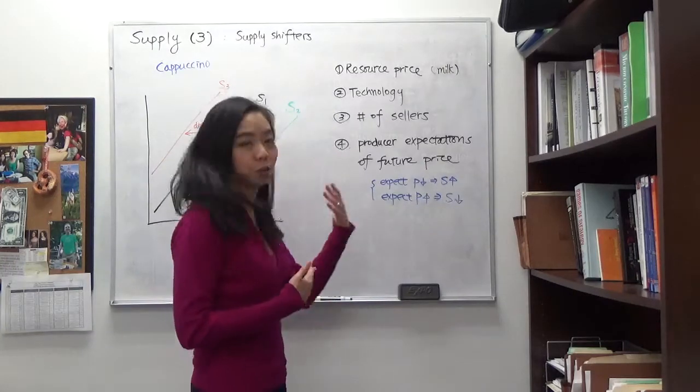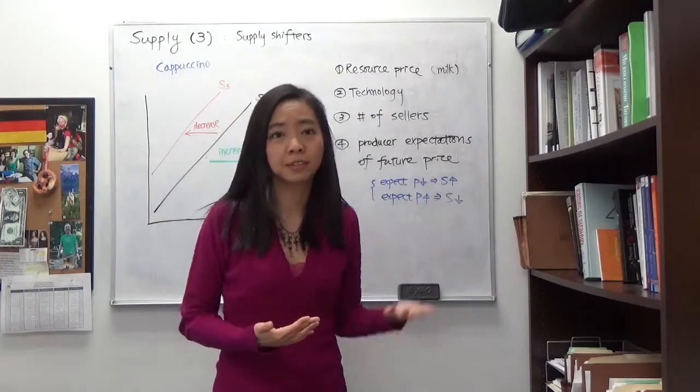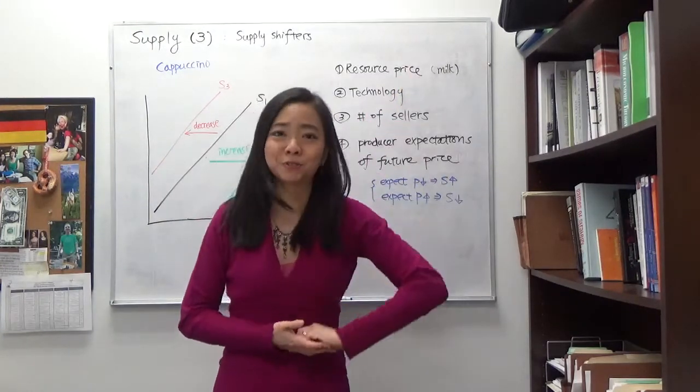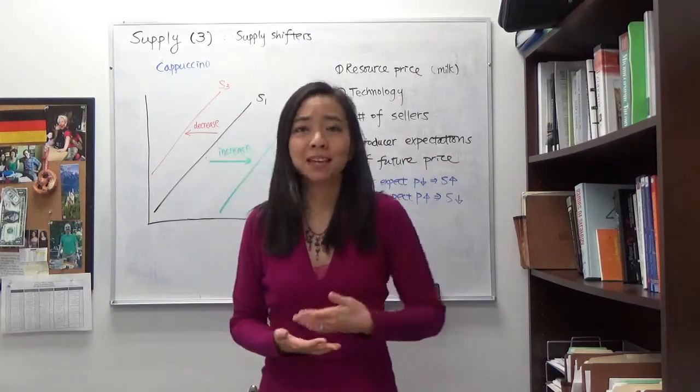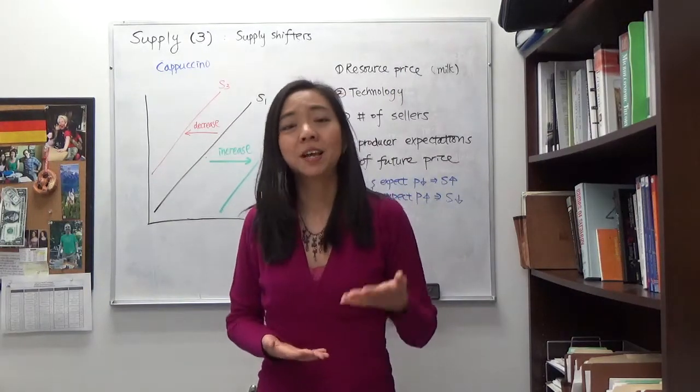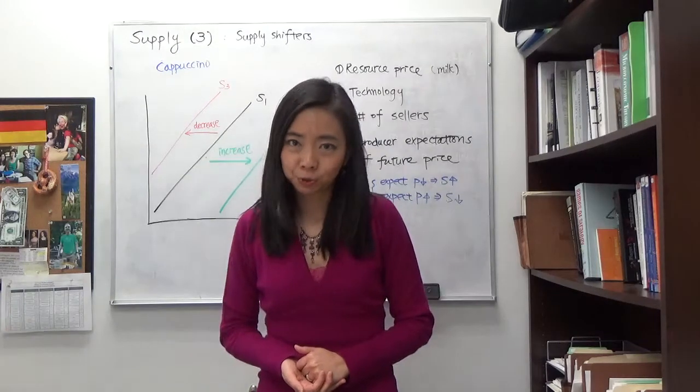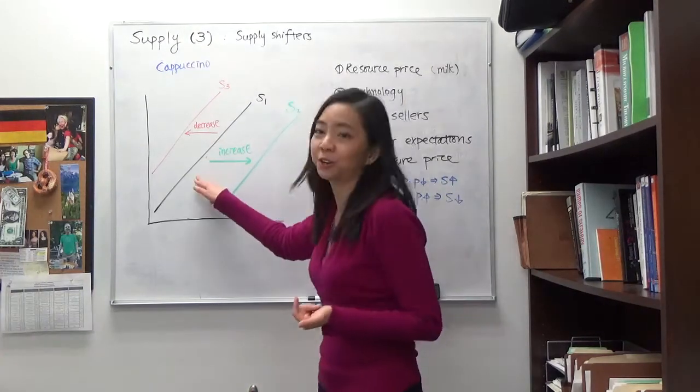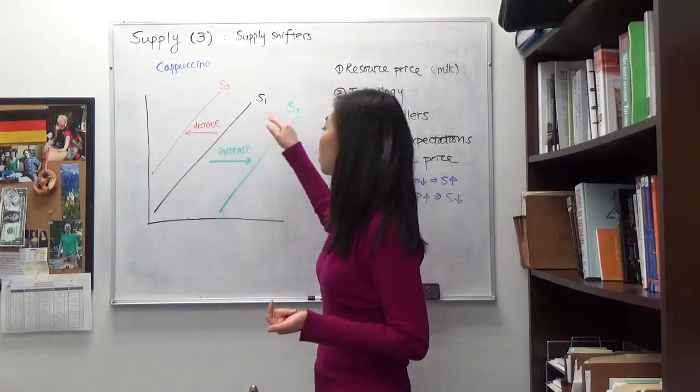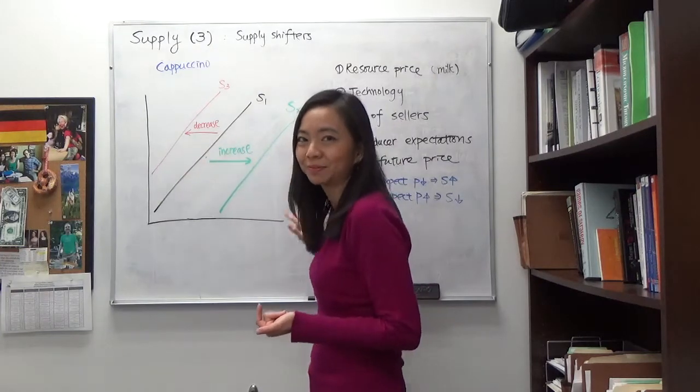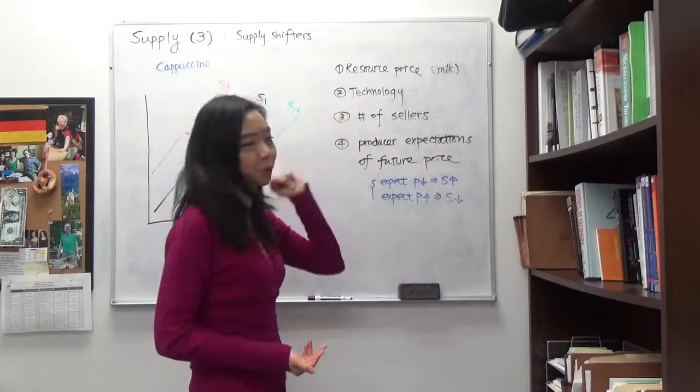And by contrast, if there is a decrease in resource price or decrease in the price of milk, then that's going to make it cheaper to make cappuccino, which will increase our supply of cappuccino, shifting our supply curve from S1 to S2, shifting to the right. So the first one is resource price.